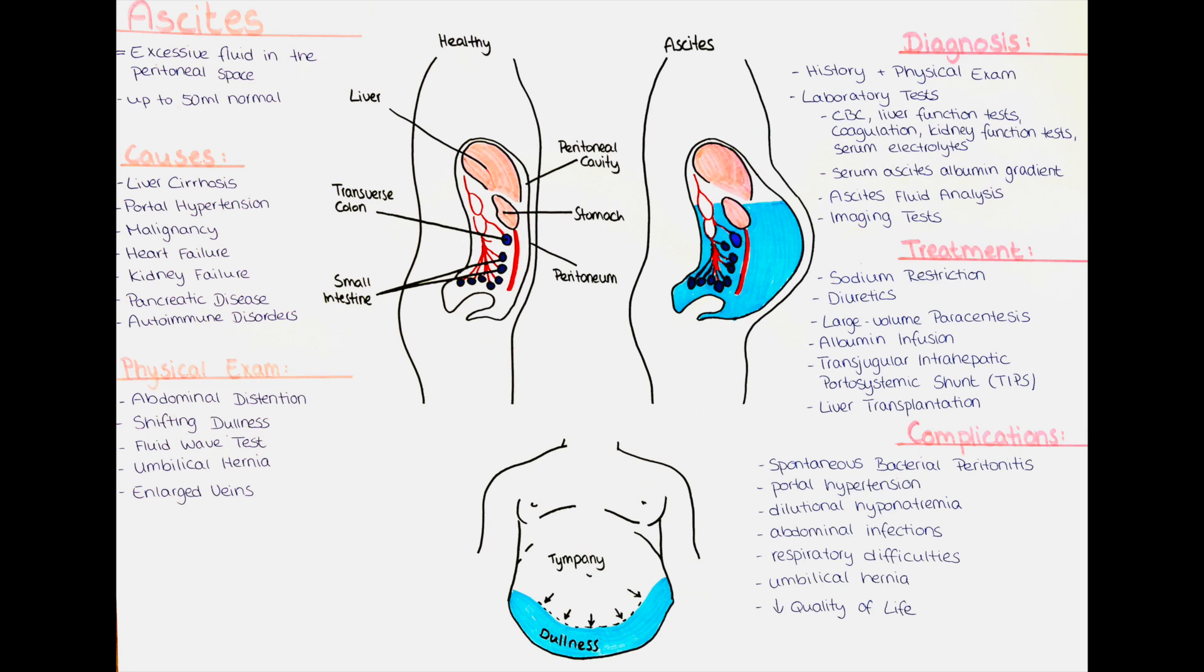Certain types of cancer, particularly abdominal cancers such as liver, ovarian, pancreatic, or gastrointestinal cancers, can cause ascites. Cancer cells may spread to the peritoneal cavity and result in fluid accumulation.